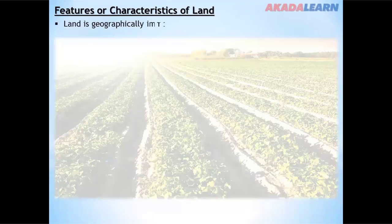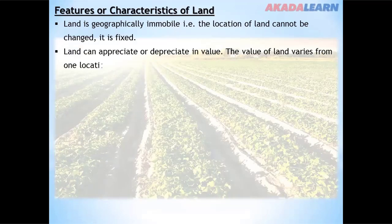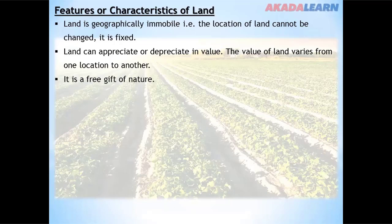Land is geographically immobile — that is, the location of land cannot be changed; it is fixed. Land can appreciate or depreciate in value, and the value of land varies from one location to another. It is a free gift of nature, and it is abundant in some areas and scarce in others.